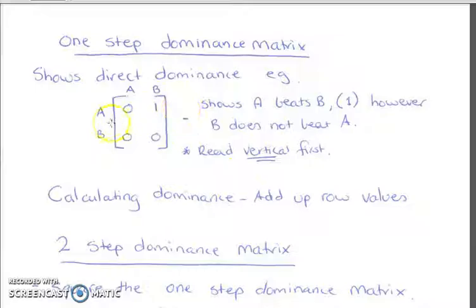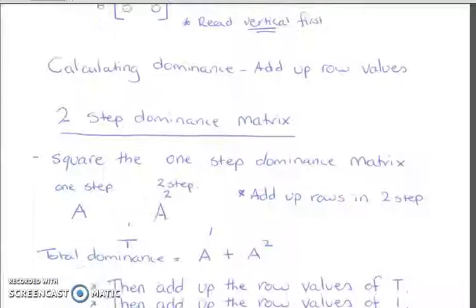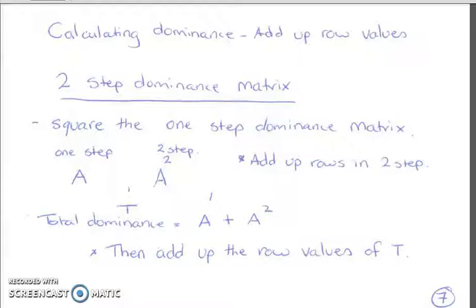And we can see even if we had A, B, C, D, E, the highest value that's added up across is the most dominant. Two step dominance: to get through a two step dominance, you square the one step dominance. And then we can work out total dominance by adding that first one step dominance and the two step dominance together.